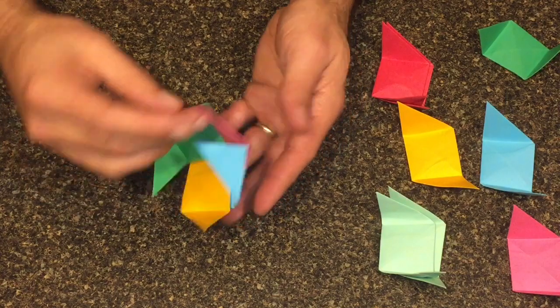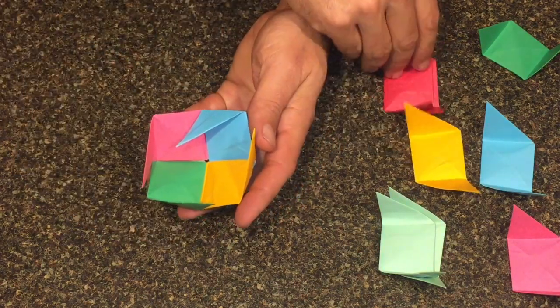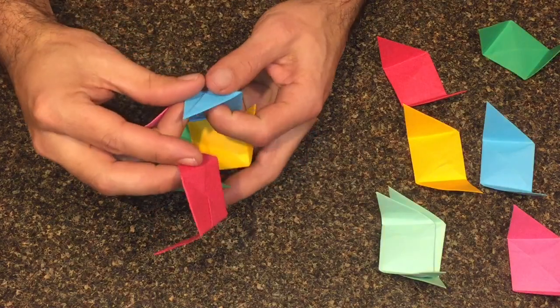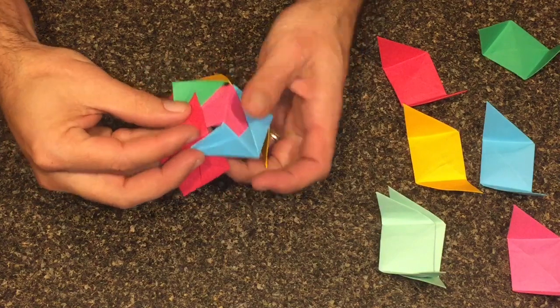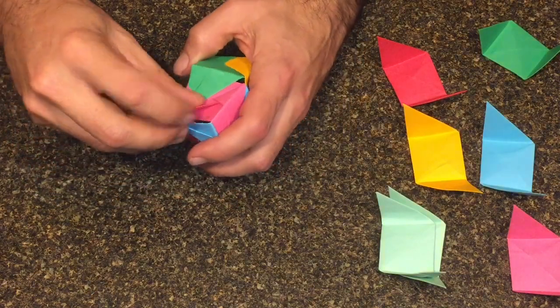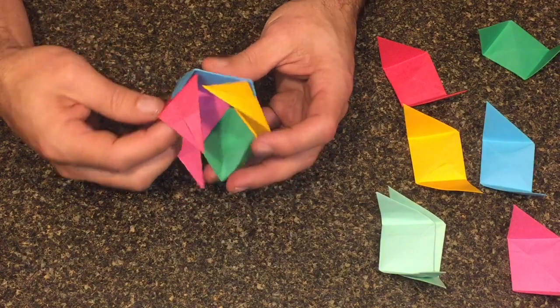Now that those four pieces are put together, turn it over to expose the four remaining pointy ends. We're going to add one piece to each of these ends, forming a three-sided pyramid this time. Do that to all four of the exposed ends, and you'll have just four pieces left.